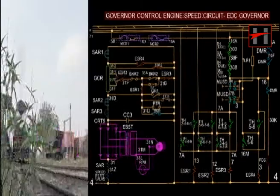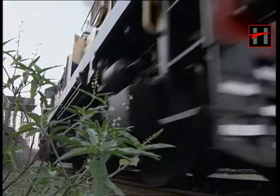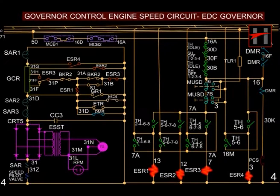The speed of the diesel engine is controlled by energizing a particular combination of engine speed relays: ESR1, ESR2, ESR3, and ESR4.